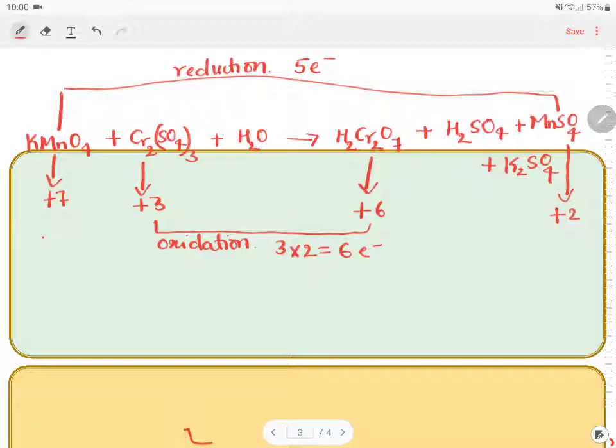We know the thumb rule that in any redox reaction, the number of electron change during oxidation and reduction should be same. Here we have 6. Here you have 5. How do we balance this equation?